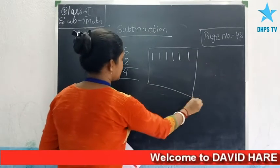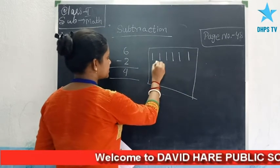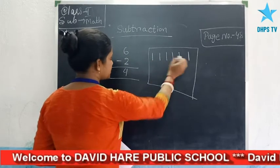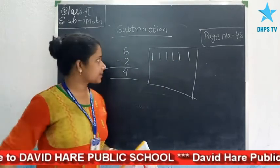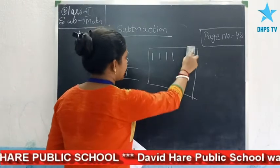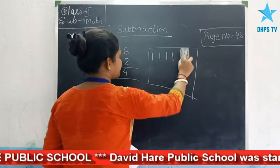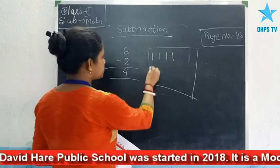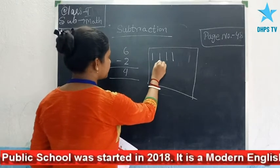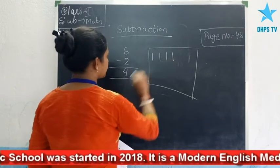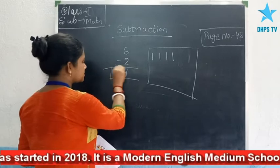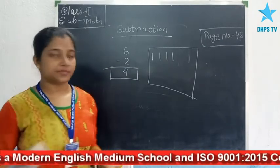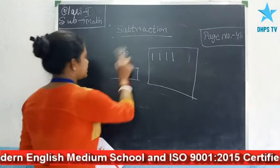Here you can see 6 small lines — 1, 2, 3, 4, 5, 6 — and 2 lines are crossed out from the 6 lines. So how many lines are left? 1, 2, 3, 4 — the answer is 4. So subtraction means take away.